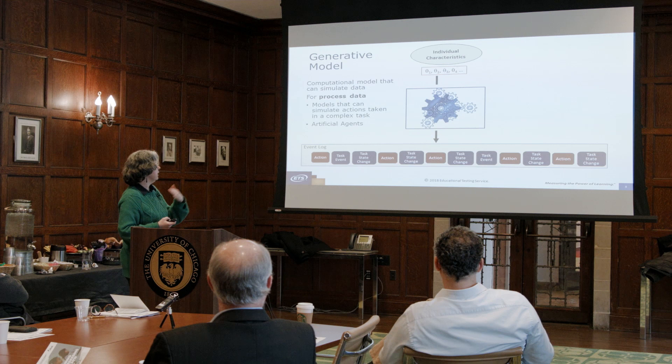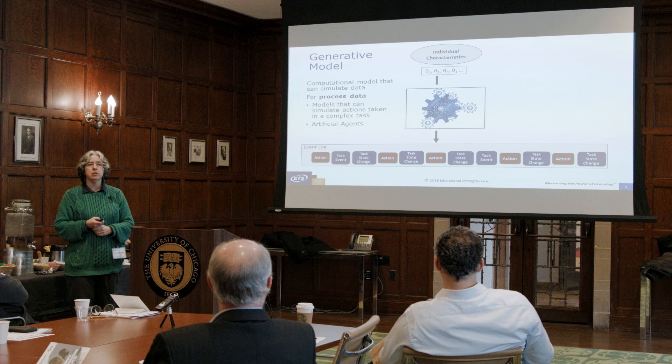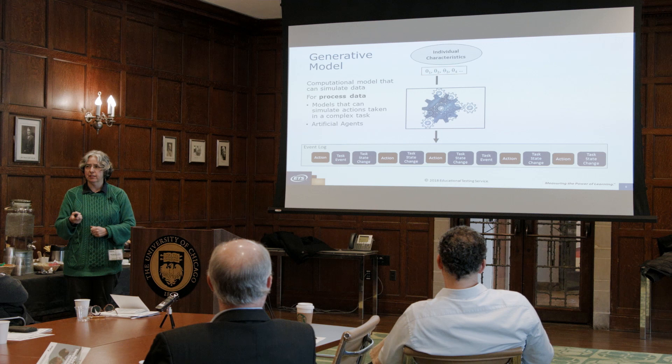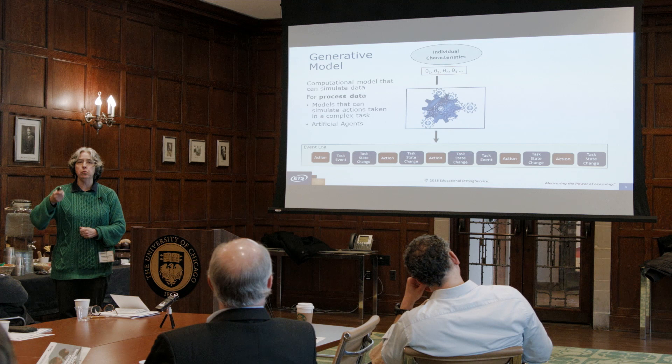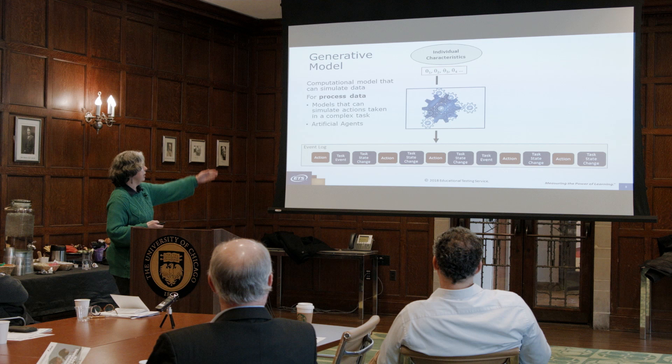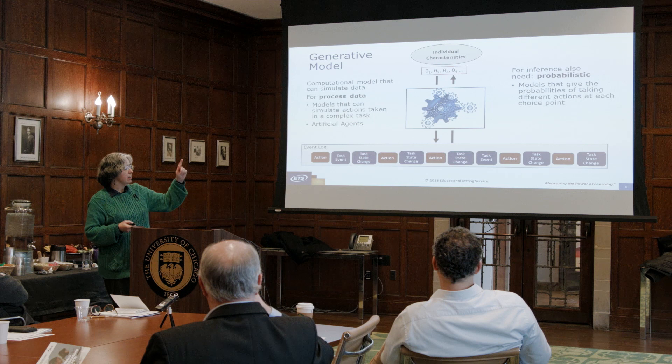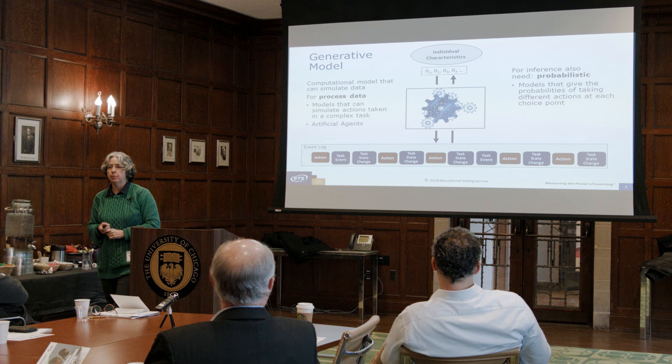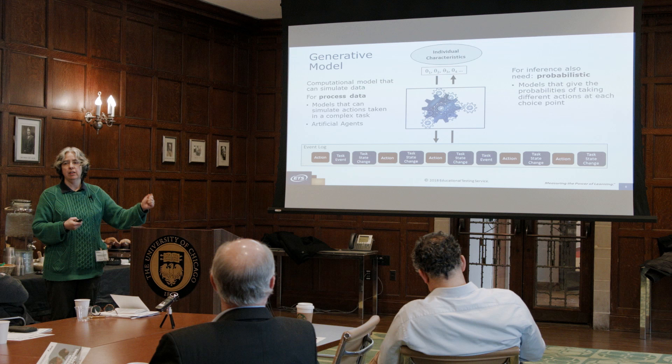When I talk about generative models, I'm talking about a computational model that can simulate data. Because we're interested in process data, these have to be models that can simulate actions taken in a complex task — you can think of them as artificial agents or AIs, something that could actually do the task in place of a human. If we have a model like that, it can generate the same play record that a human would. But because we want to make inference, we need to make sure our model is also probabilistic — it has to give us the probability of taking different actions at each choice point.